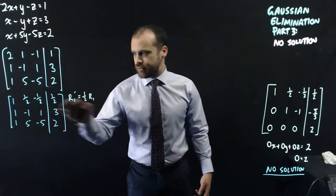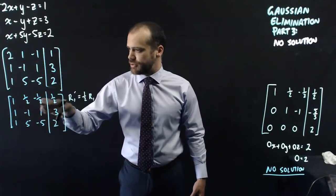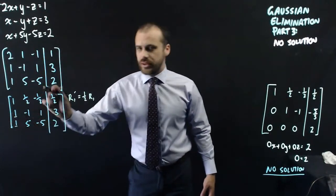Alright, so that's pretty straightforward. We've taken our first row, multiplied by a half, and all of these values get halved. You can see that here. Now, I'm going to get rid of this one, and get rid of this one, turn them into zeros.